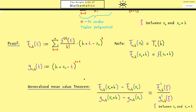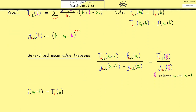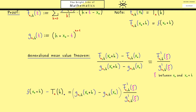Our goal is to calculate this difference. It equals the denominator times the quotient of the derivatives. Everything involving g is straightforward: putting x0 plus h into g gives 0 (we subtract the same thing), and in the second term we subtract x0 so h remains, giving h to the power n+1.